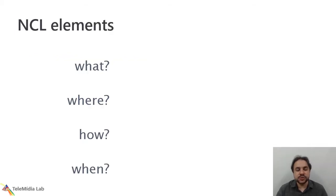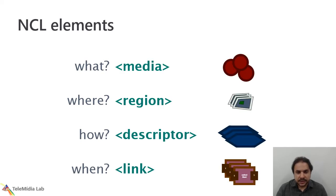NCL elements try to answer four questions. What present, where present, how present, and when present. The first element that we talk about is media. That is try to answer the what question. The second element is region. That's try to answer the where question. And the third is the descriptor. That's trying to answer the how. And link, and link trying to answer the when. First, we'll talk a little bit about the three first ones.